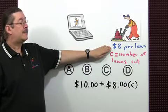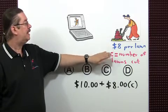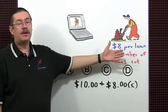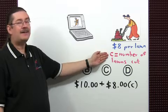Each lawn earns him $8. So, if we let C represent the number of lawns he cuts, the total amount of money he earns is just 8 times C.